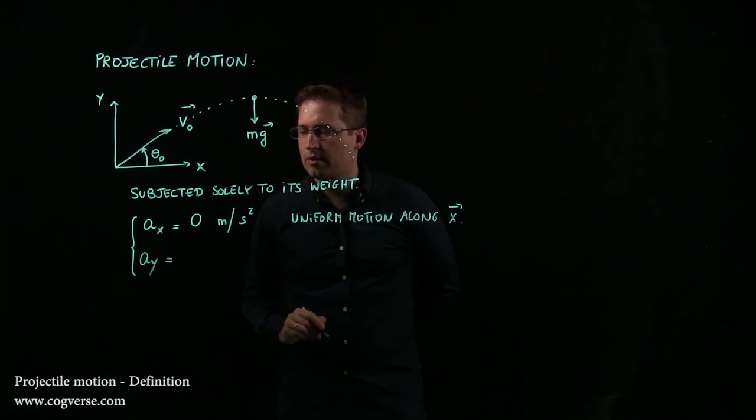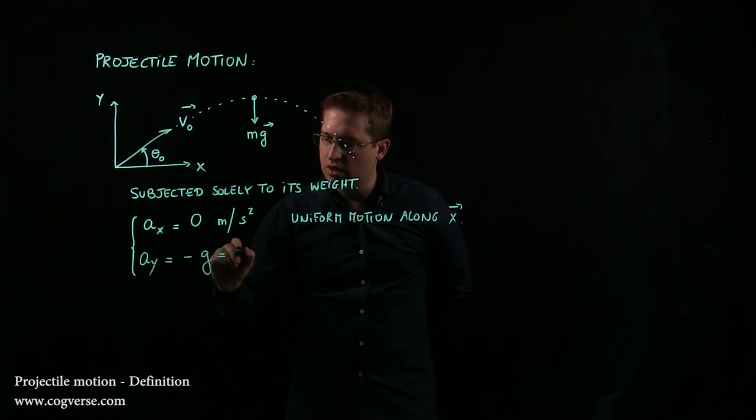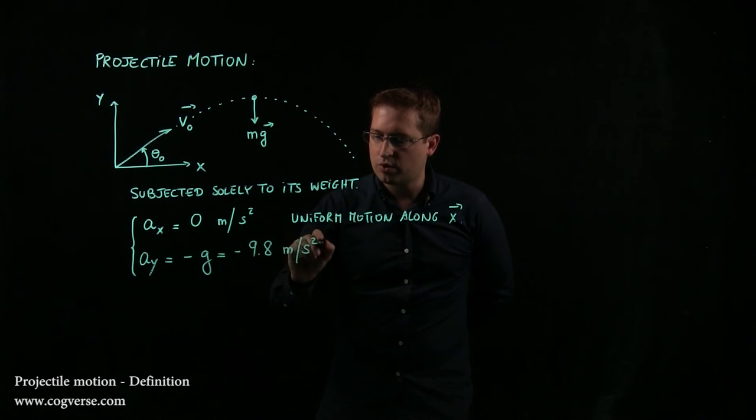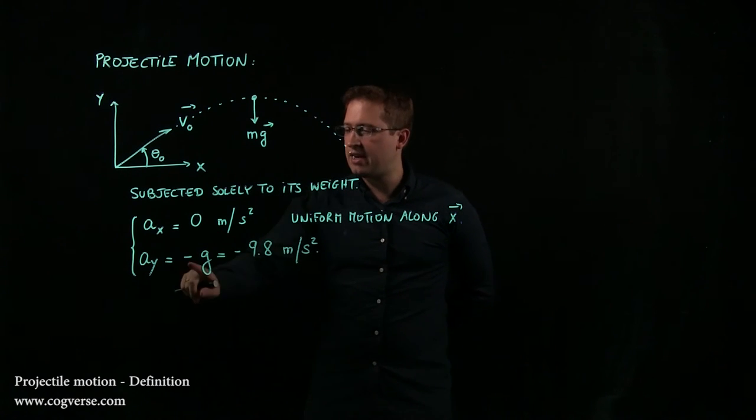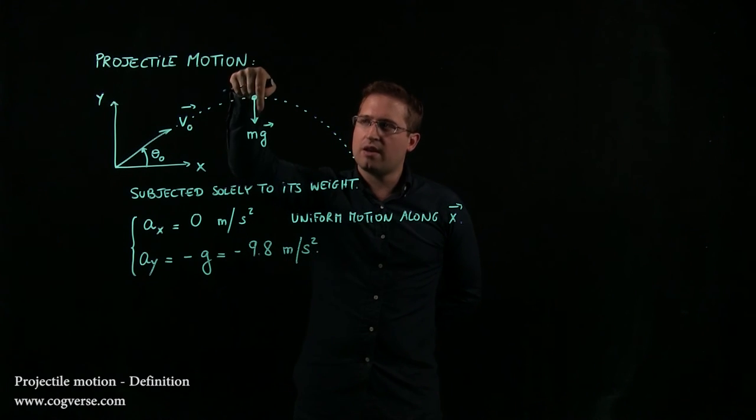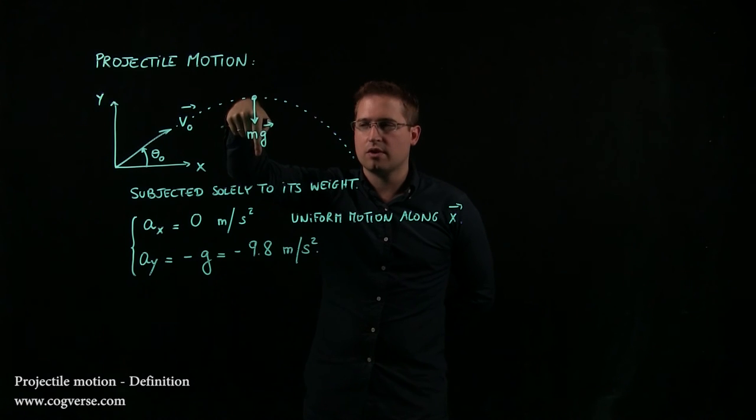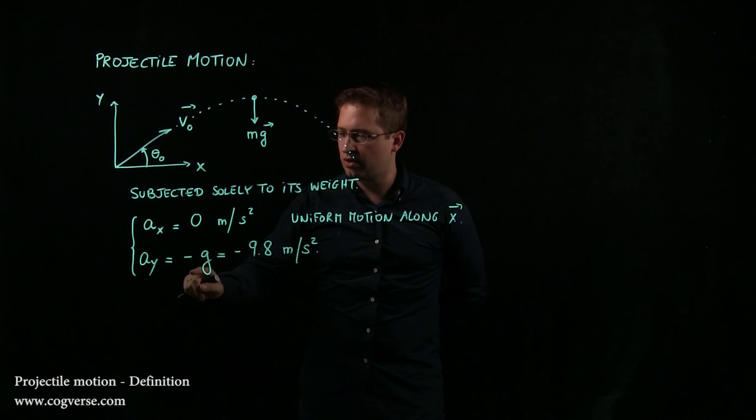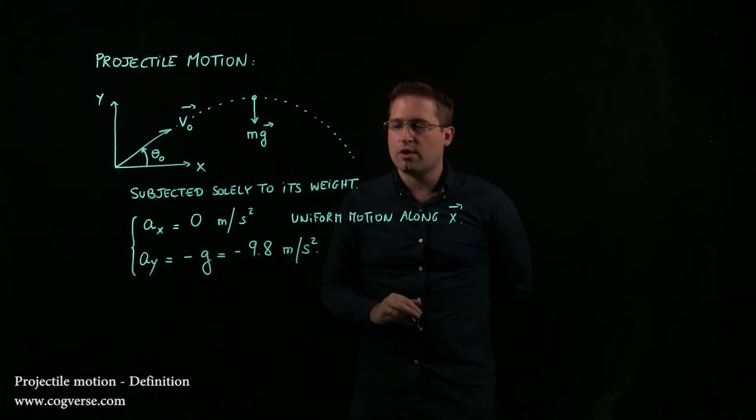Vertically the acceleration ay is negative g which is negative 9.8 meters per second squared. That's acceleration due to gravity and the negative sign comes from the fact that we chose y to be positive upward and the weight force is pulling down. So the acceleration is going down opposite what is declared to be positive, so we have a negative sign here and g itself is 9.8.